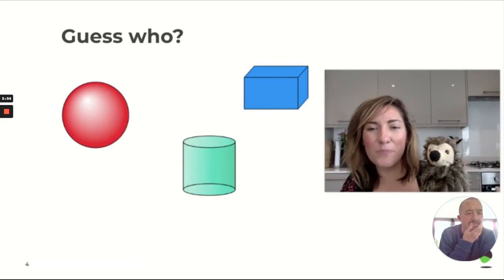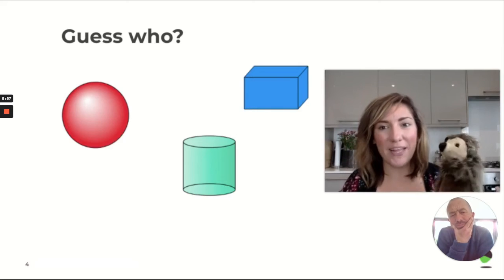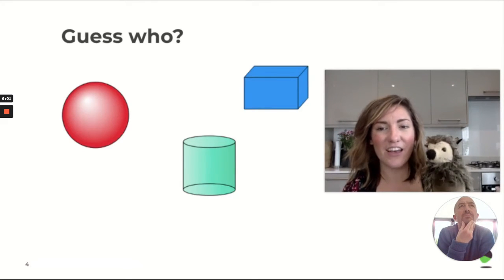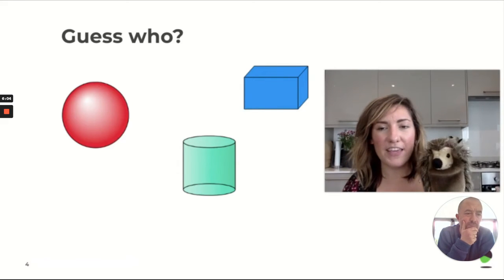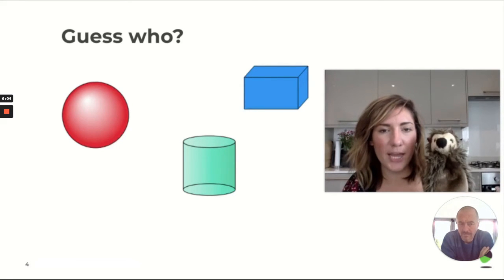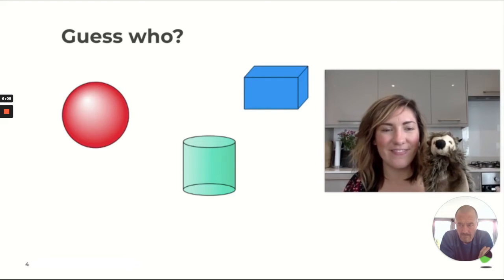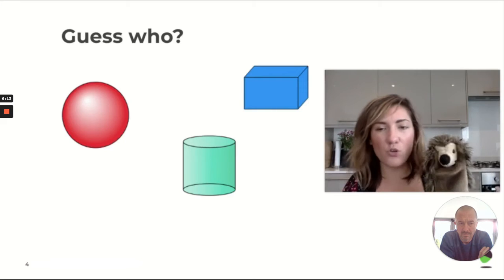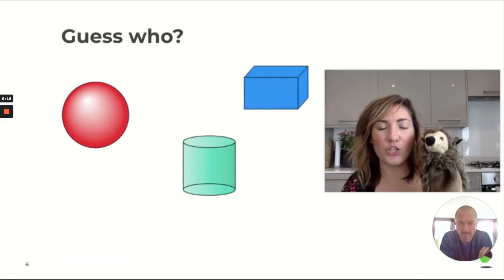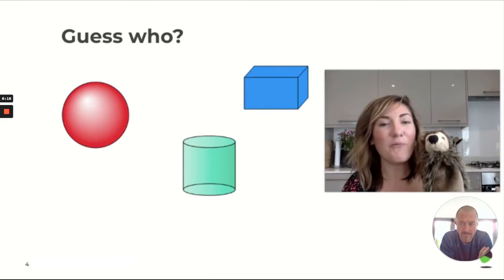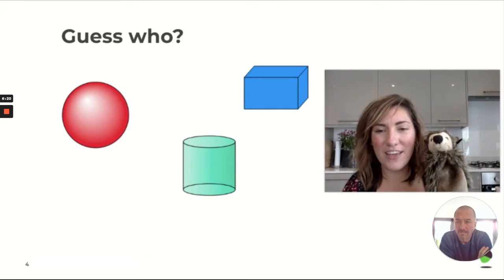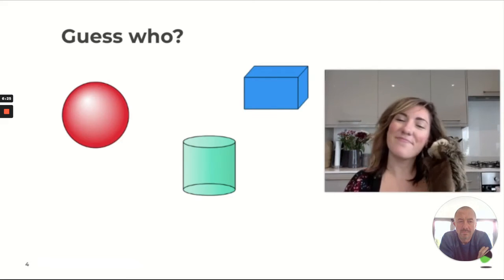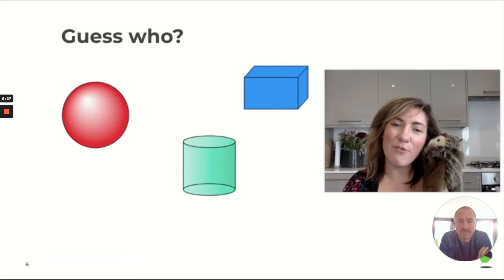Have you ever played the game Guess Who before? Well, you might have played it a different way, but we're going to play Guess Who as in Guess the Shape. So Harold is going to have a think in his head. Do you see the three shapes up on the screen? Harold is going to choose one of them. He's going to have a think in his head. He's going to picture one of those shapes in his head, and he's going to describe it to you, and we want you to point to the one that you think he's speaking about. Okay. Are we ready, everyone? All right.